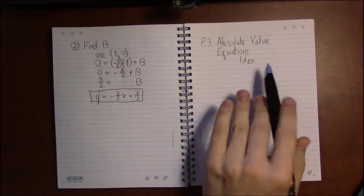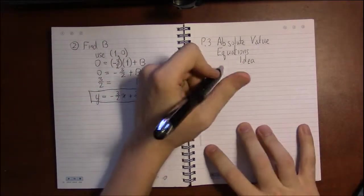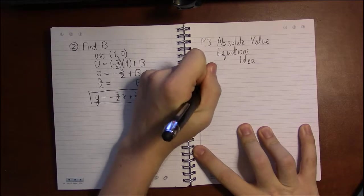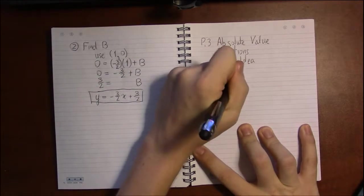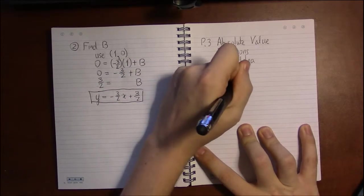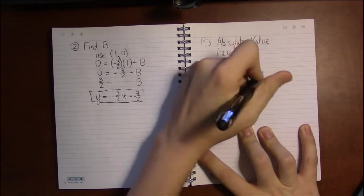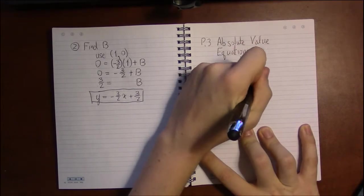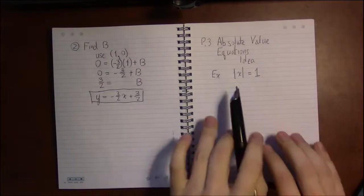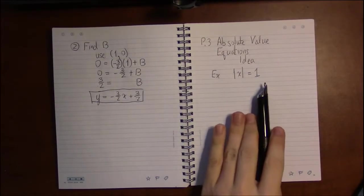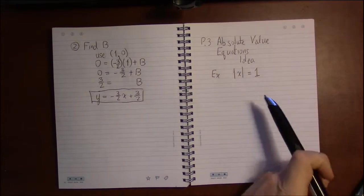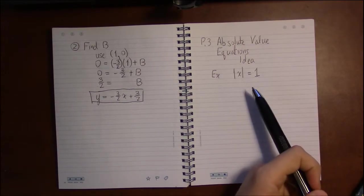Absolute value equations are simply equations that have those vertical bars in them—these absolute values. This is an absolute value equation. It's a very simple absolute value equation and a very good place for us to start.